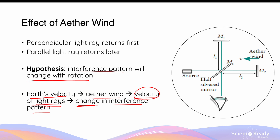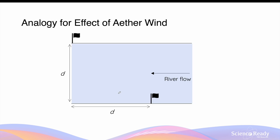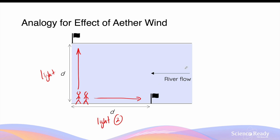An analogy that will help you understand the effect of the ether wind on the velocity of the two perpendicular light rays is imagining there are two identically fit swimmers about to race. One swimmer is swimming across the river while the other is moving parallel to it. Each swimmer is to reach a flag equal distance from the starting point and back. The swimmer travelling perpendicular to the river flow is analogous to the light ray perpendicular to the ether wind, and the swimmer parallel to the river is analogous to the light ray parallel to the ether wind. The river flow will have a different effect on each swimmer's velocity depending on their direction of travel, with the perpendicular swimmer being affected less than the parallel swimmer.